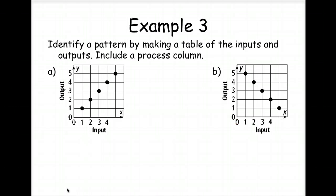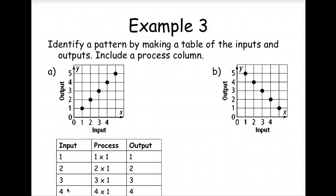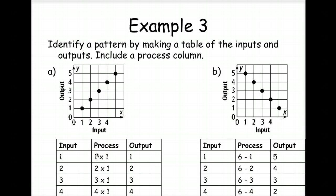Okay, example three. We're to identify a pattern by making a table of the inputs and outputs, and we're to include a process column. Okay, so for A, our input column is one, two, three, four, and we've got a dotted five, so we'll go ahead and make one for five. Same here, one, two, three, four, five.